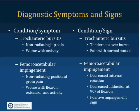In femoroacetabular impingement — similar to shoulder impingement — there is non-radiating positional pain in the groin, worse with flexion or extension and with activity. On examination you find decreased internal rotation and decreased adduction at 90 degrees of flexion, which is part of the impingement sign maneuver. Gluteus medius tears are uncommon; you'll see weakness on attempted use of the hip, localized pain, and abnormal gait. Confusingly, there is also tenderness over the greater trochanter and decreased range of motion.